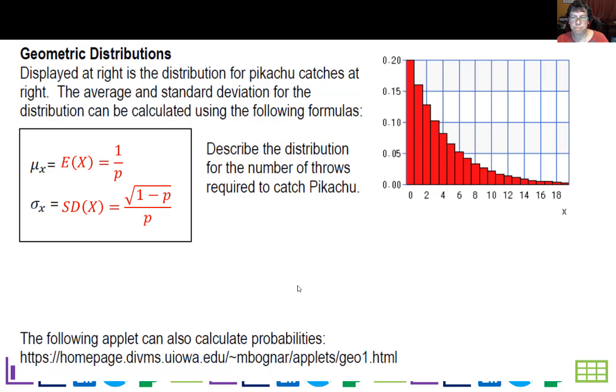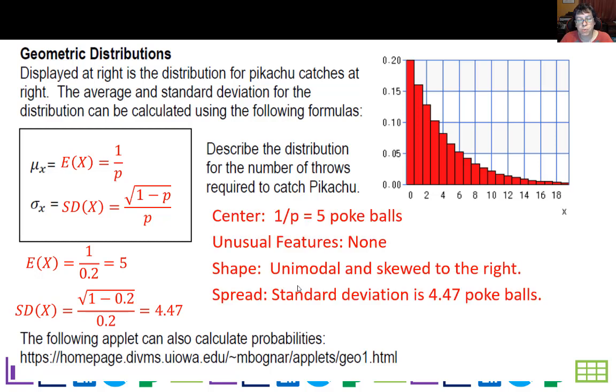Our mean is 1 over p, and our standard deviation is the square root of (1-p) over p. For this distribution, my mean is 5, so I'd expect to need about 5 pokeballs to catch a Pikachu. My standard deviation is 4.47. The center is 5 pokeballs, it's unimodal and skewed to the right, with spread of 4.47 pokeballs. There's a nice applet to calculate geometric probability.